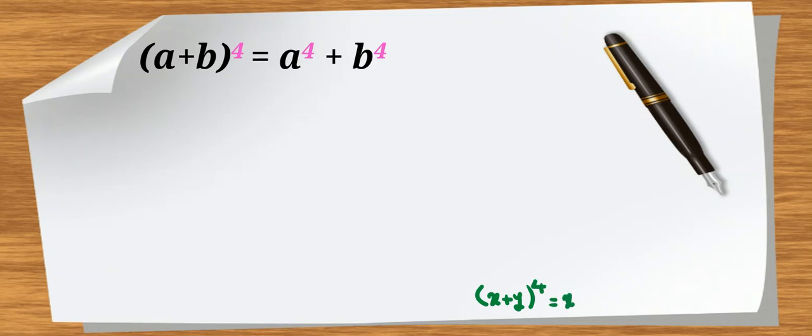Also, it has formula for n. It is x to the 4 plus 4x cubed y plus 6x squared y squared plus 4xy cubed plus y to the 4.